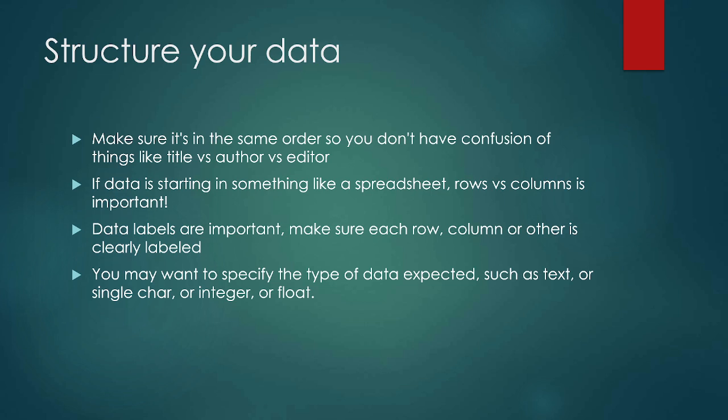Okay, structuring your data. When we have data we want to think of a way to structure it so that everything is in the same order. So let's say we have a whole bunch of data about books — we want to make sure we are clearly noting what is a title, what is an author, what is an editor. If we're storing things in a spreadsheet we want to make sure we know which are rows and which are columns. We need to make sure we're labeling things clearly so we don't mix up authors and editors, for example — those are two very different things.